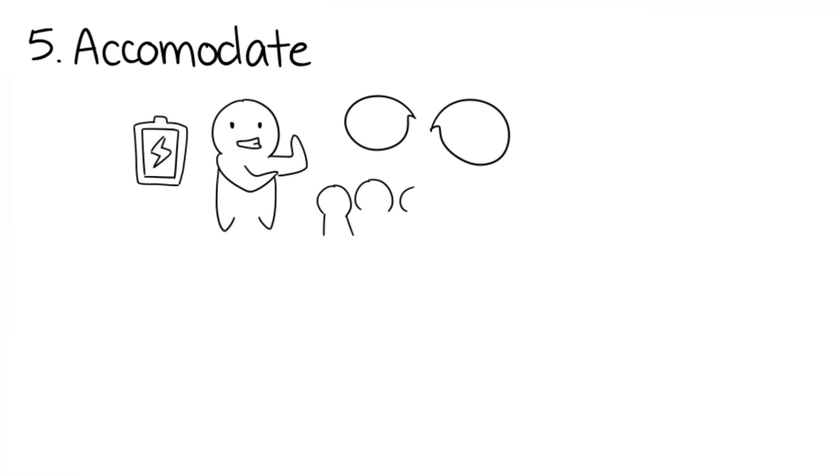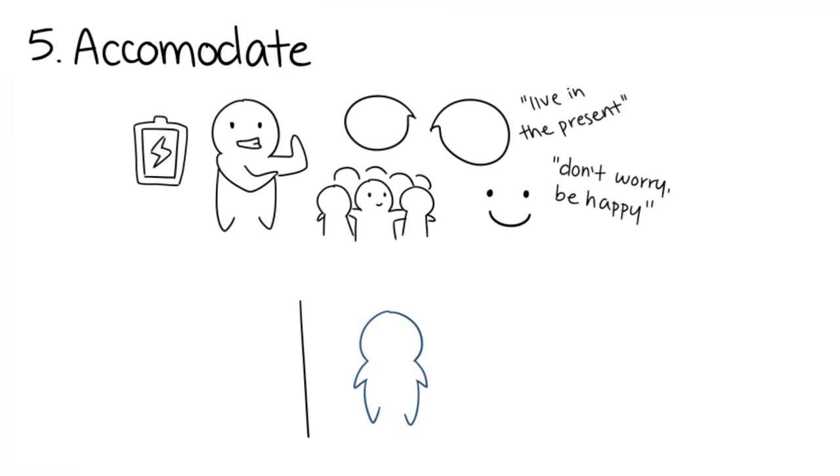Five: Accommodate introverts' differences. The way introverts and extroverts think, feel, perceive, and make decisions are varied. For instance, extroverts who are full of energy like to expand their energy by actively engaging in social activities, hanging out with friends, and seeking happiness. They can make statements like 'live in the present' and 'don't worry, be happy.' On the other hand, introverts expend their energy by living inside and spending time alone.